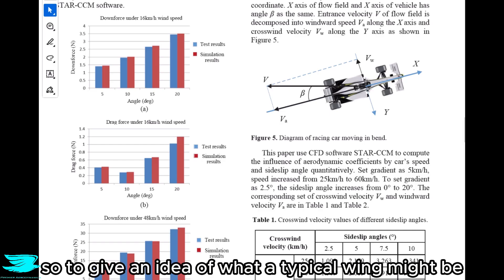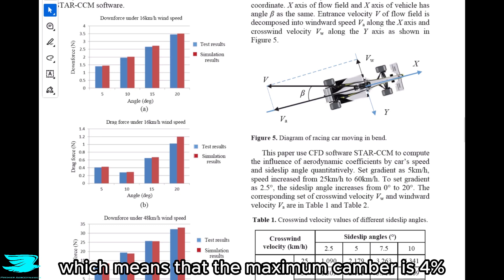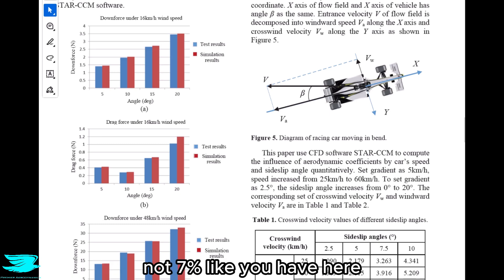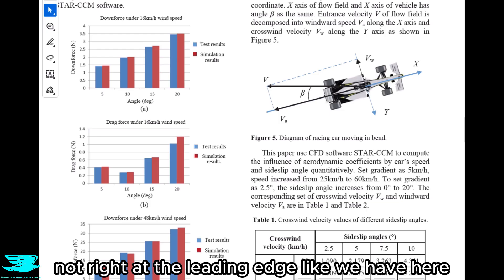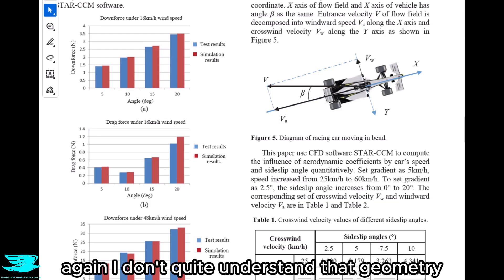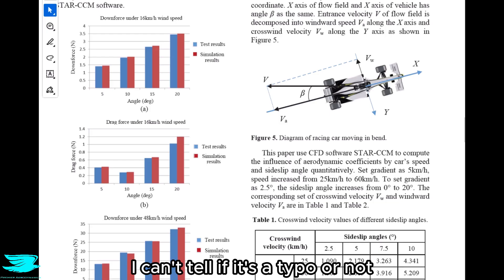To give you an idea of what a typical wing might be, a basic airplane wing might be a NACA 4412, which means that the maximum camber is 4%, not 7% like you have here. And that maximum camber of 4% occurs 40% from the leading edge of the wing, not right at the leading edge like we have here. Again, I don't quite understand that geometry, what it would look like, and because we don't have any clear pictures of it, I can't tell if it's a typo or not.